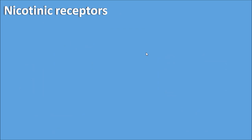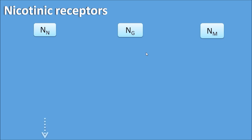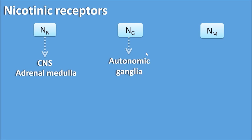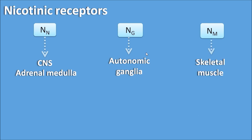Now let us go into detail about the nicotinic receptors. Nicotinic receptors are of three types: NN, NG, and NM. NN is called neuronal, NG is called ganglionic, and NM is called muscular. NN type are mainly present in the CNS and on the adrenal medulla. NG type are mainly present on the autonomic ganglia, both sympathetic and parasympathetic. NM type are mainly present on skeletal muscle.